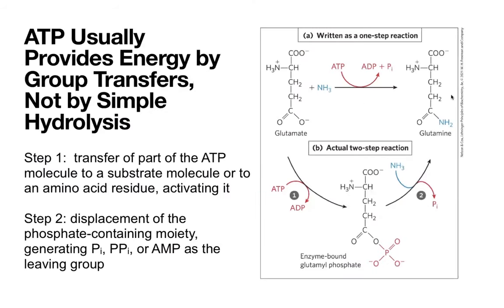We were talking about ATP hydrolysis — taking ATP and adding water to get ADP and inorganic phosphate. But typically that's not what happens. Instead, ATP gets transferred in a series of steps rather than just getting hydrolyzed. In the first step, we typically transfer one part of the ATP molecule to a substrate molecule or amino acid residue, activating it. Then once it's activated, you get displacement of the phosphate-containing moiety, generating Pi, PPi, or AMP as a leaving group.